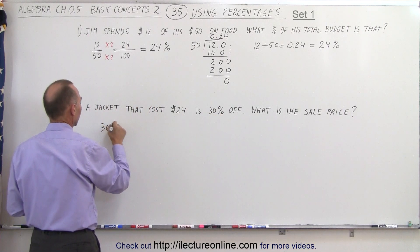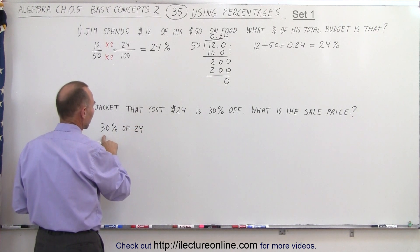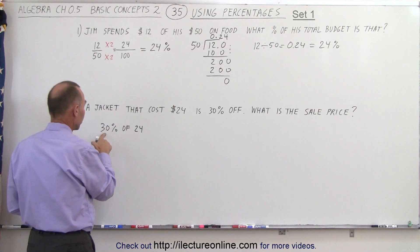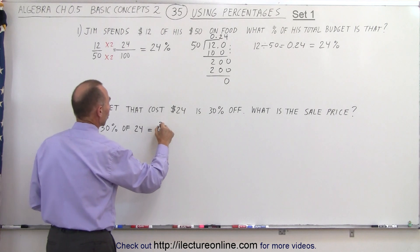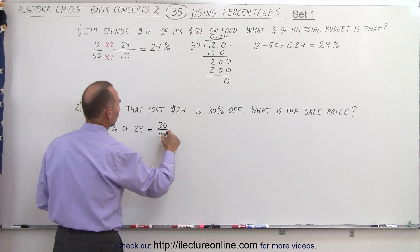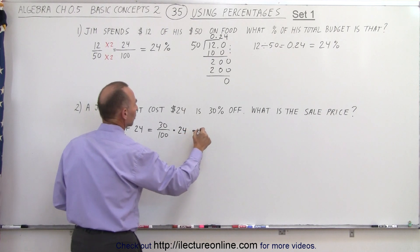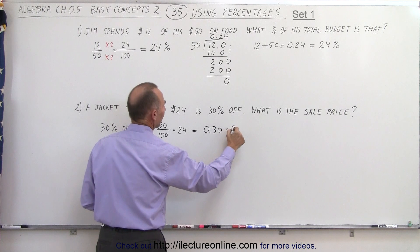So 30% of 24 - the word 'of' means multiplication. We have to convert 30% into a decimal. This is equal to 30 divided by 100 multiplied by 24, or 0.30 times 24.